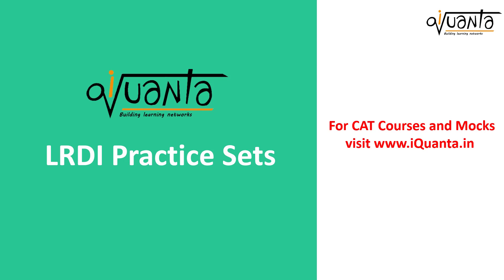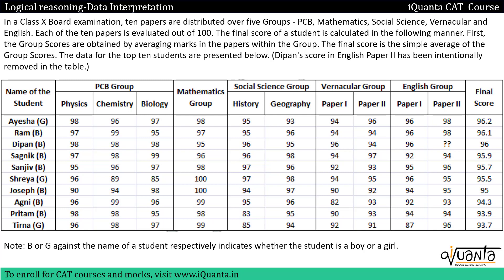Hello everyone. In this video we are going to solve a past CAT DI set. The question is: in a class 10 board examination, 10 papers are distributed over 5 groups — PCB, Mathematics, Social Science, Vernacular and English. These are the 5 groups and all 10 subjects will be distributed across these 5 groups.